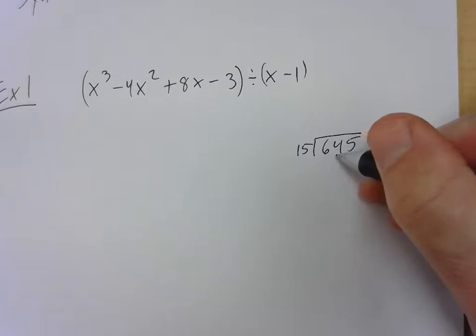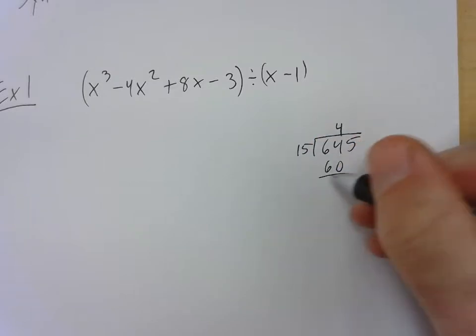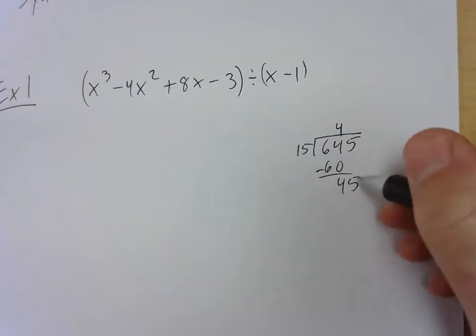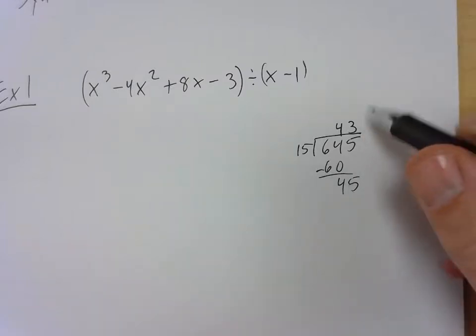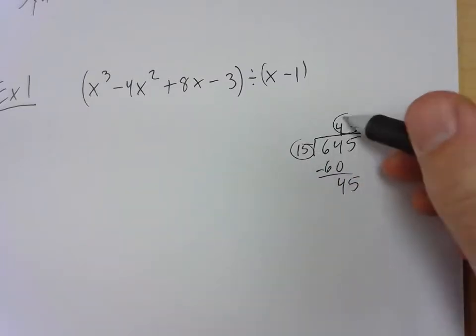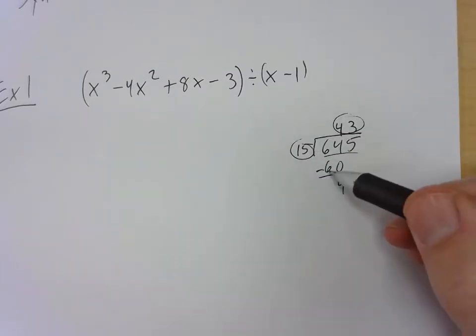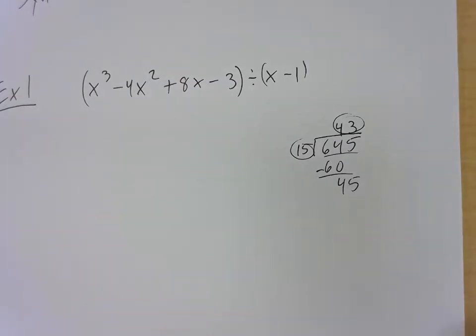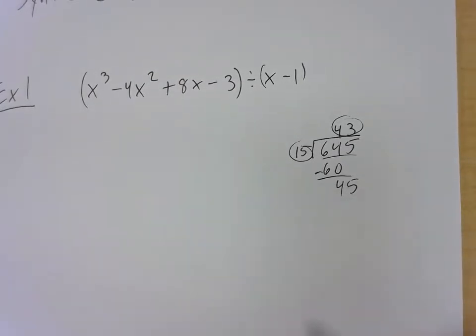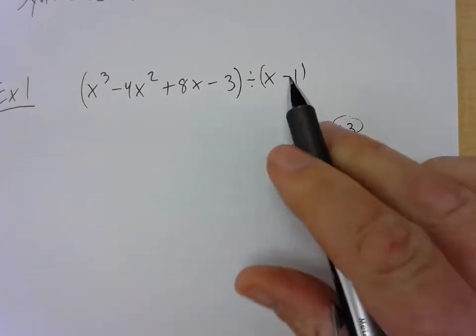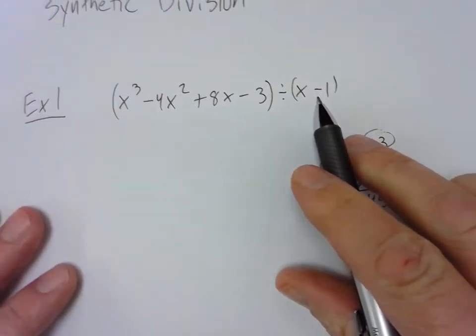15, 30, 45, 60. So that would be 4 times. 4 times 15 we multiply, we get 60 and then we subtract, we get 45 and then it goes in there 3 times. So we know that 15 times 43 is 645, but I have to subtract every time I do this. Well wouldn't it be nice if I could add every time? And I'm going to add every time by changing this number right here.